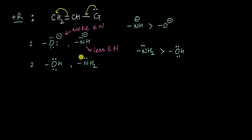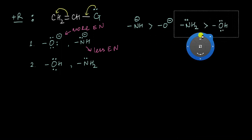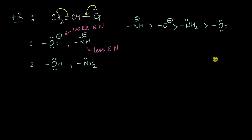Now, between these four groups — which set will be stronger plus-R: the negatively charged O⁻ and NH⁻, or the neutral OH and NH₂? Because these functional groups are negatively charged, they are relatively unstable — neutral compounds are more stable than charged species. So both O⁻ and NH⁻ don't want this negative charge, meaning they are much more likely to push electrons away. Therefore, the charged groups are going to be stronger plus-R groups compared to the neutral ones.